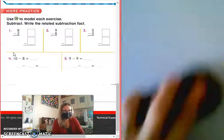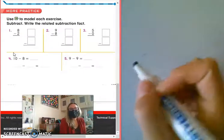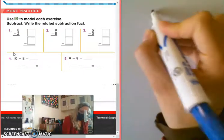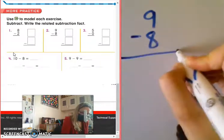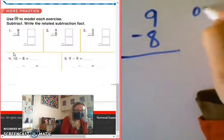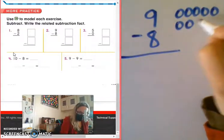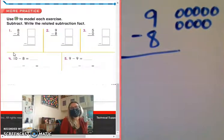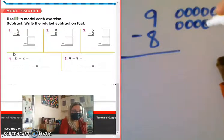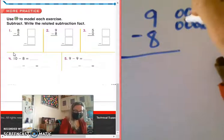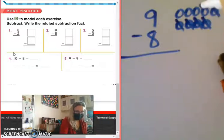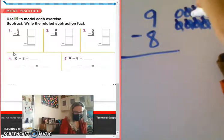Connor, you're going to do the next one for us, okay? So Connor, number 2 says 9 take away 8. So let's imagine, Connor, that we have 1, 2, 3, 4, 5, 6, 7, 8, 9. And we're going to take away 8. Count with me. 2, 3, 4, 5, 6, 7, 8.